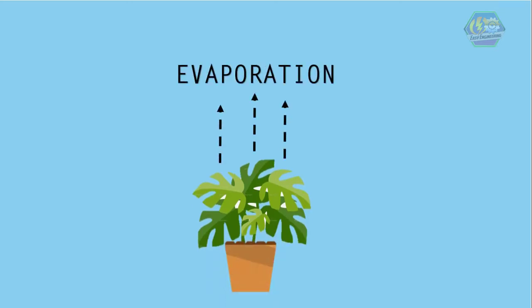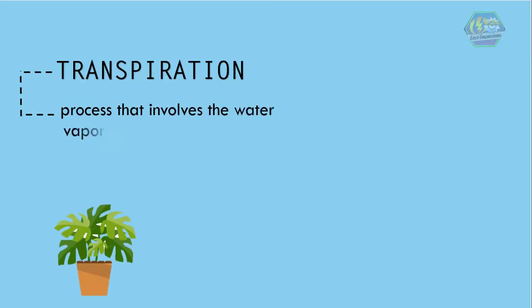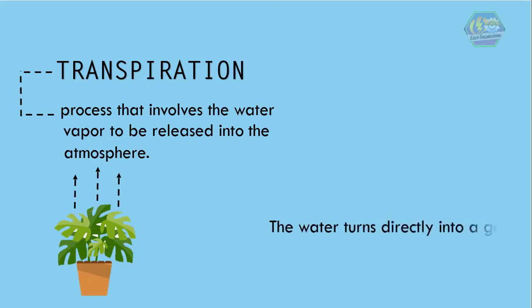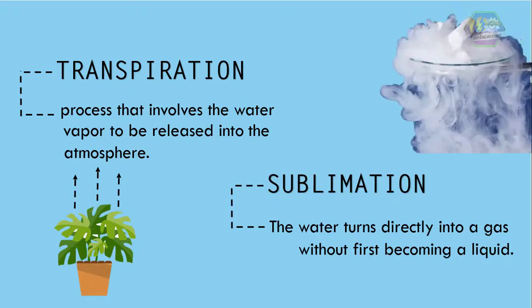Plants also play a role in evaporation. Trees and plants also sweat in a way like us. Transpiration is a process that involves water vapor being released into the atmosphere. But sometimes there is something that happens to water where it turns directly into a gas without first becoming a liquid, and this process is called sublimation. If you notice ice, you can observe that it emits water vapor even if there is no sun, and that's sublimation.